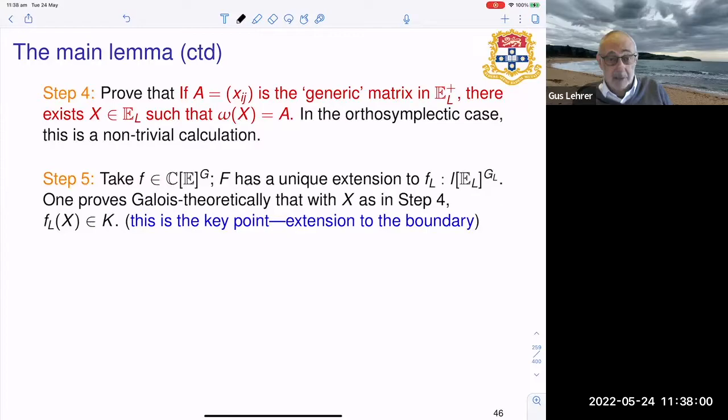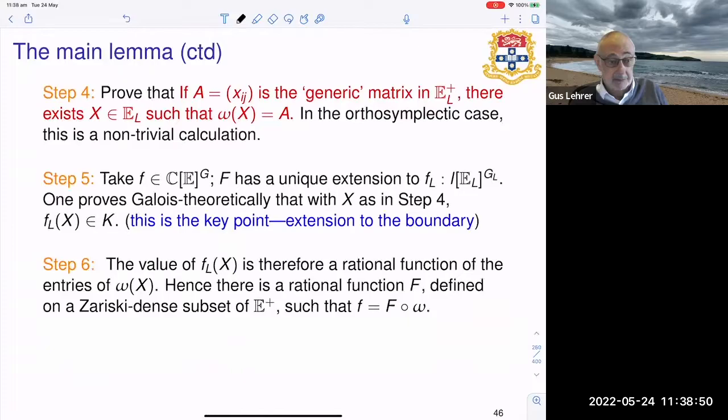And we want to show that a generic such matrix has an omega root, so every generic matrix can be realized as omega(x). That is actually a non-trivial calculation. In the language of algebraic geometry, one proves that omega is a faithfully flat morphism.